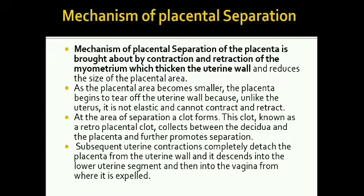How does placental separation occur? As we have seen, during the first and second stages of labor the uterus is contracted and retracted, so its size is reduced. But in the placenta, there is no contraction or retraction — the placenta keeps its size. Because the uterus is contracted and retracted and the muscle fibers are shortened, this is how separation of the placenta occurs.